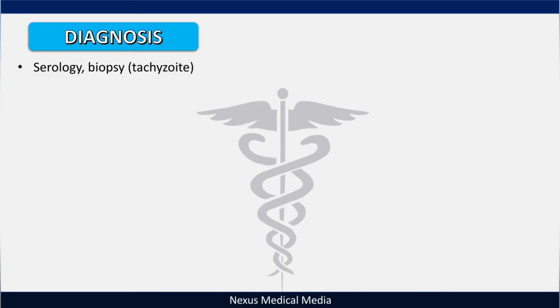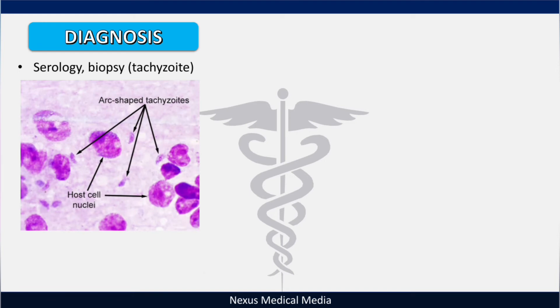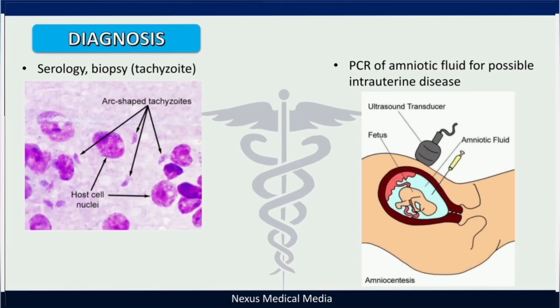For diagnosis, you can do serology, biopsy, and look for tachyzoites on microscopy. If you suspect the mother has been in contact with a cat carrying Toxoplasma gondii, you can perform amniocentesis — taking amniotic fluid guided by ultrasound — and test it by polymerase chain reaction to detect the DNA of Toxoplasma gondii.